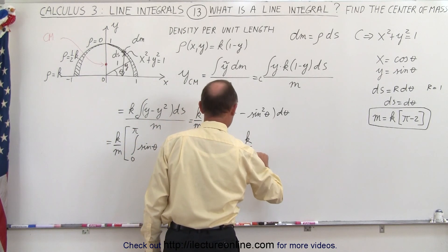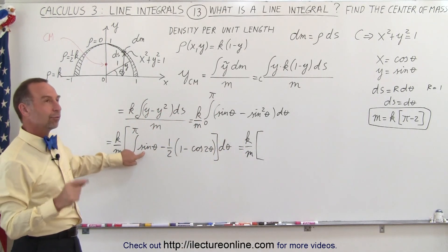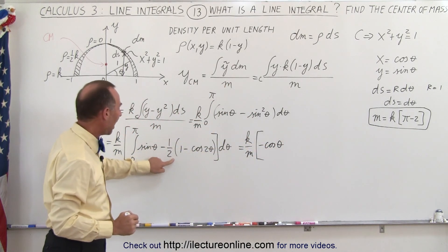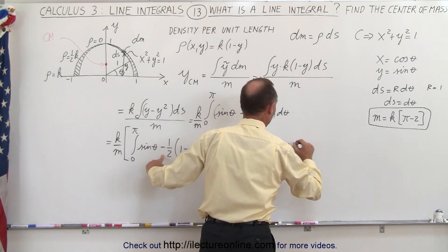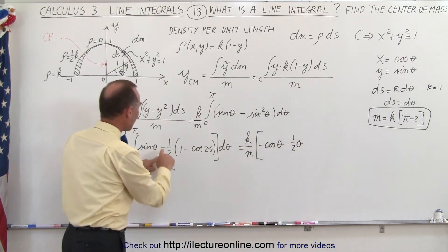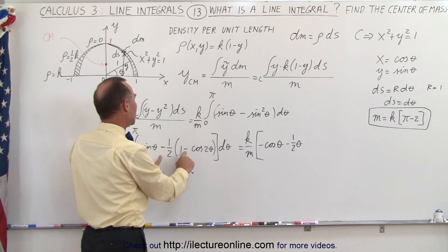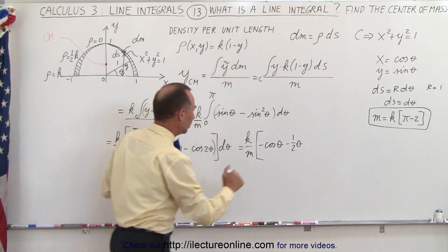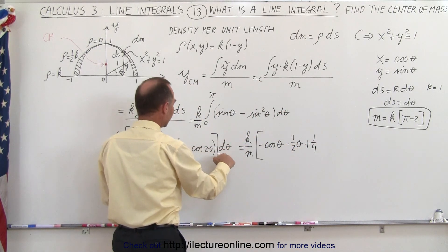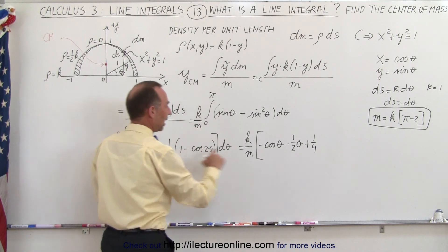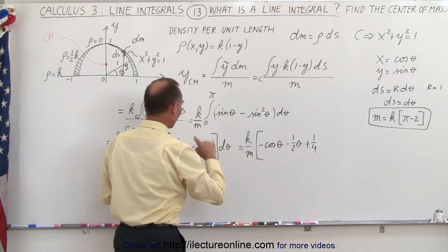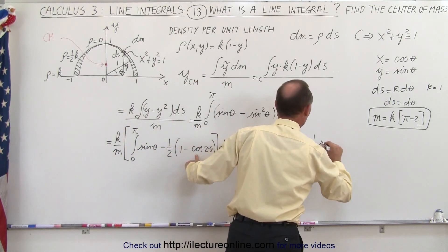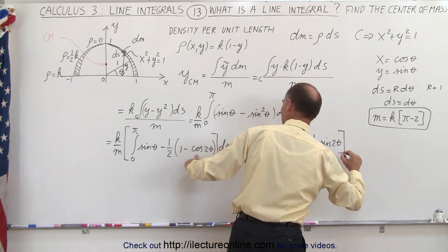This equals k over m times: the integral of sine θ gives negative cosine θ; minus one-half dθ gives minus one-half θ; and then minus times minus gives a plus, so plus one-half times cosine 2θ dθ — but since we need 2 dθ, we divide by 2, giving one-quarter. The integral of cosine gives sine, so we get plus one-quarter times sine 2θ. All evaluated from 0 to pi.